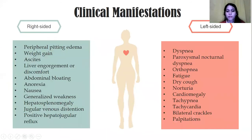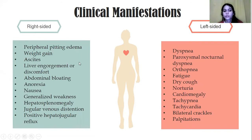The signs and symptoms of heart failure are often difficult to identify because they are frequently confused with other disorders. The clinical manifestations for right-sided heart failure include peripheral pitting edema, weight gain, ascites, jugular vein engorgement or discomfort, abdominal bloating, anorexia, nausea, generalized weakness, hepatosplenomegaly, jugular venous distension, and positive hepatojugular reflux.